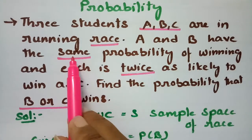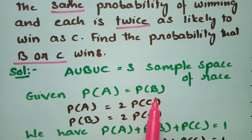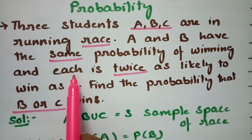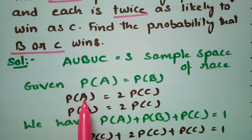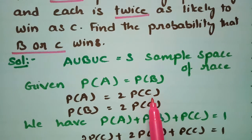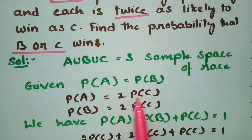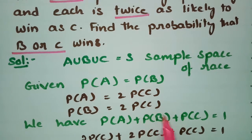A and B have the same probability of winning, therefore P(A) equals P(B). Each — meaning A and B — is twice as likely to win as C. So P(A) equals 2 times P(C), and P(B) equals 2 times P(C).